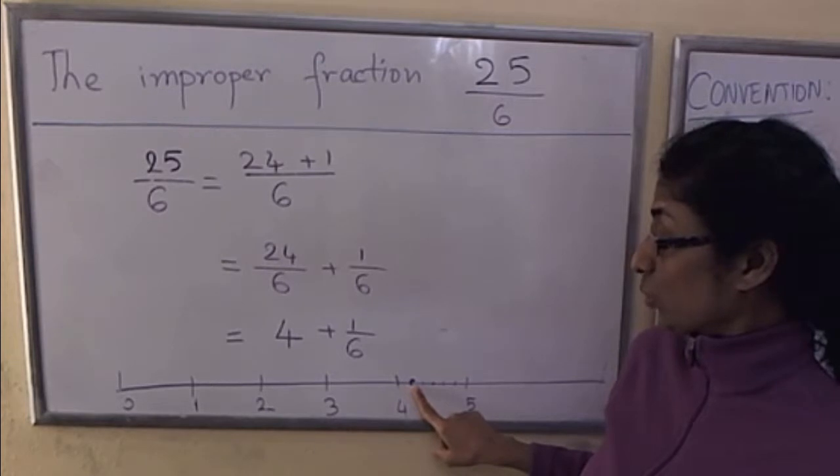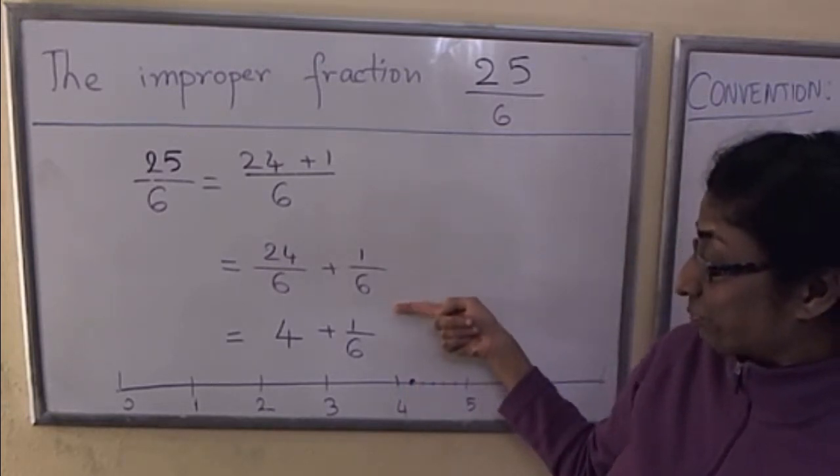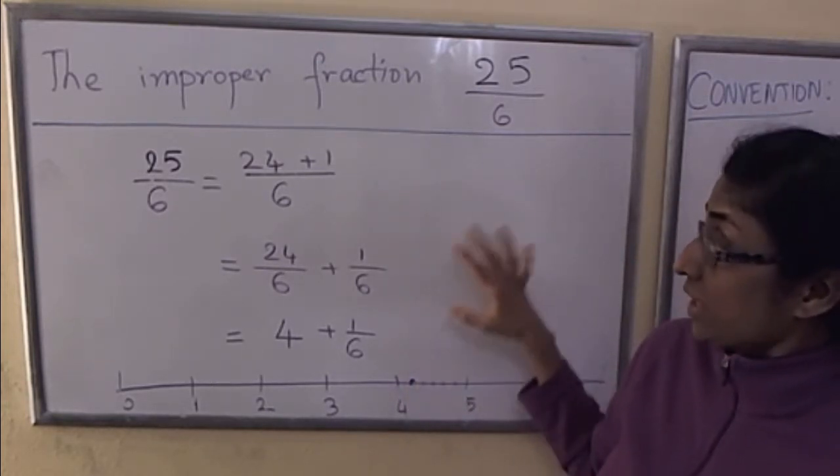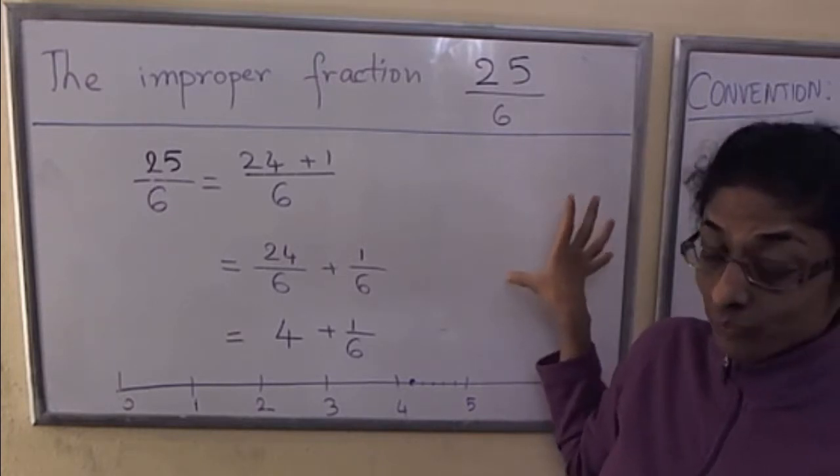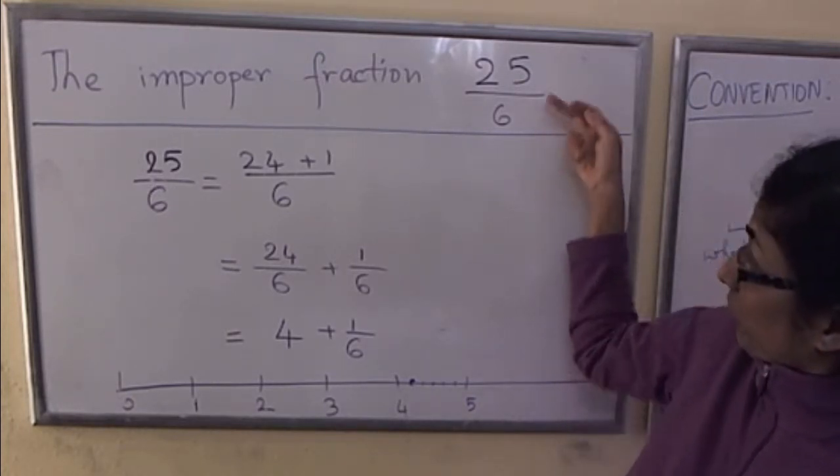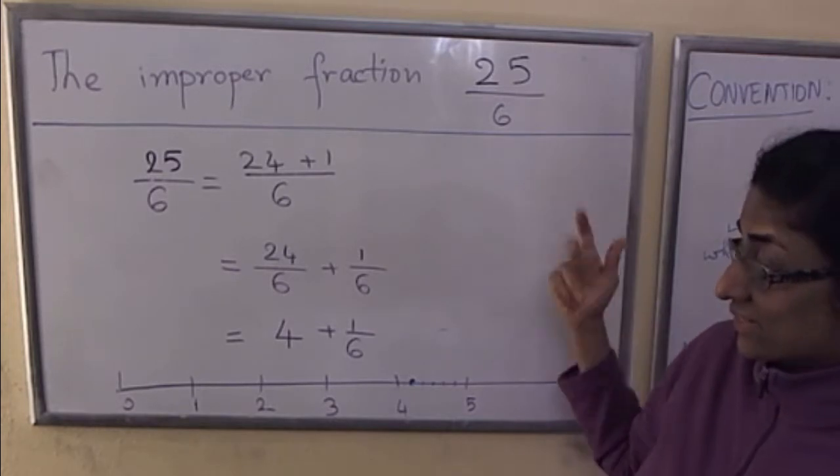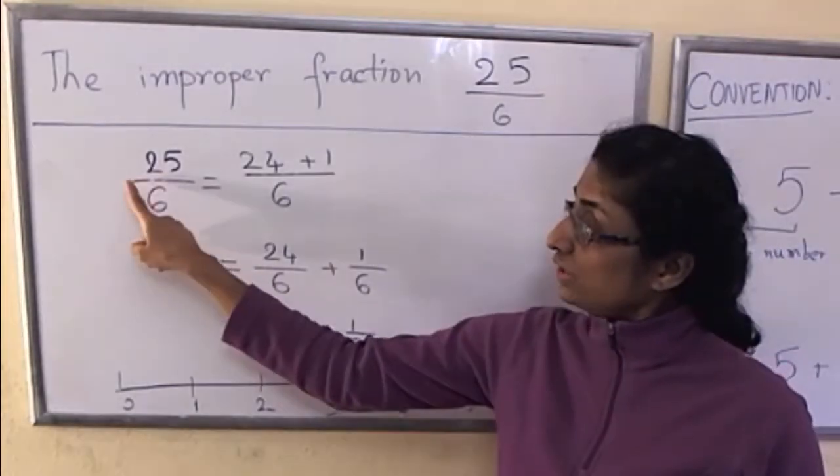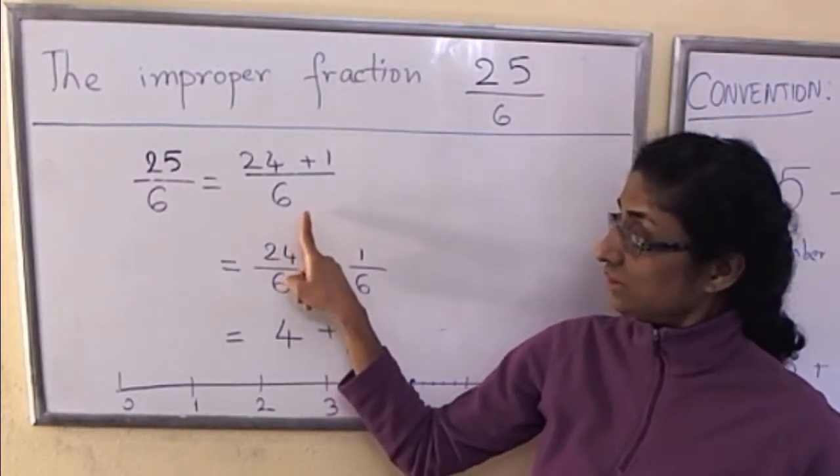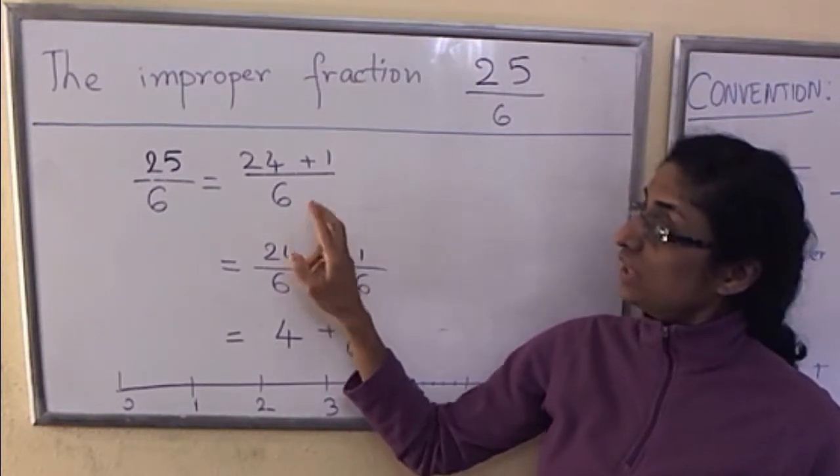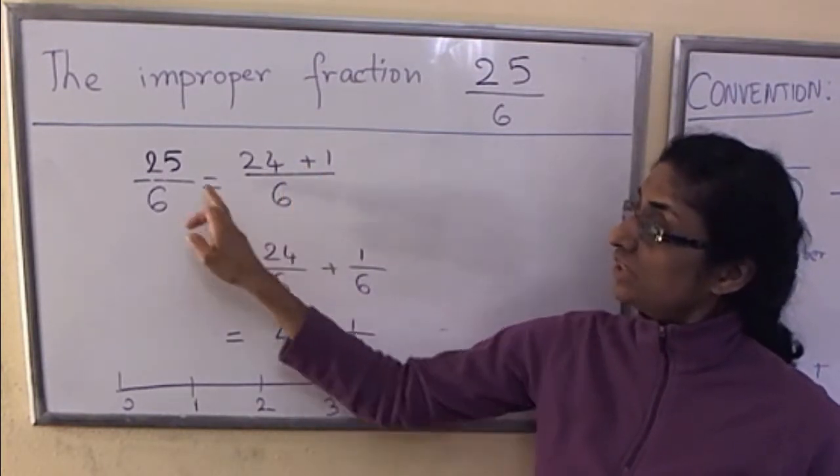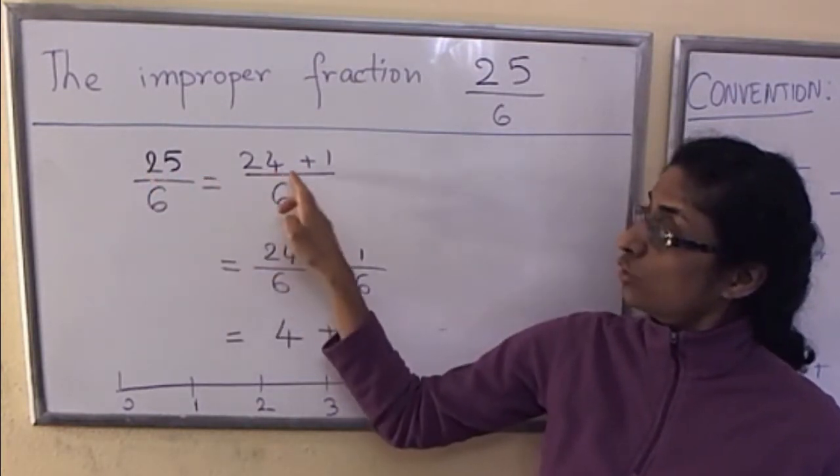Let's see the detailed steps and then I'll show you a quicker way. So 25 over 6, I rewrite it in this form where in the numerator I've rewritten 25 as 24 plus 1.